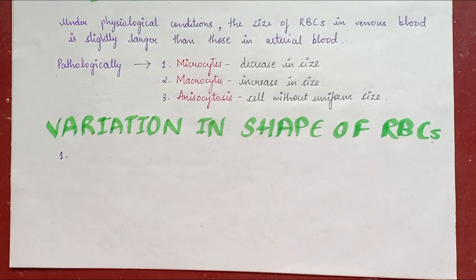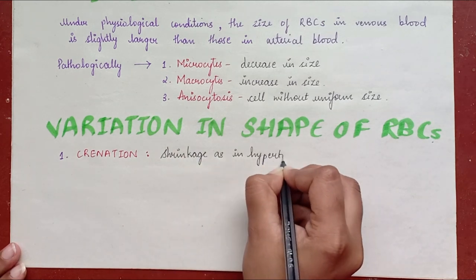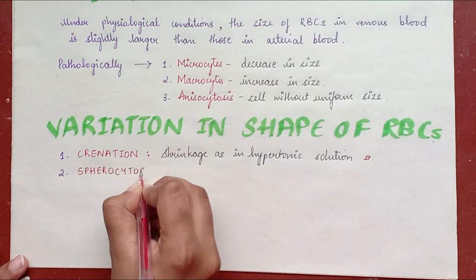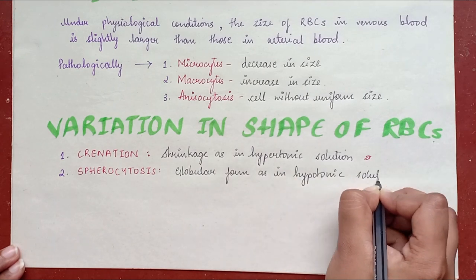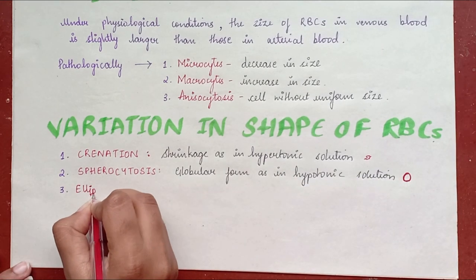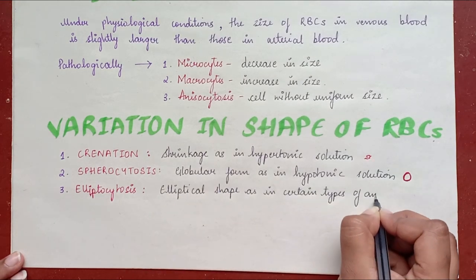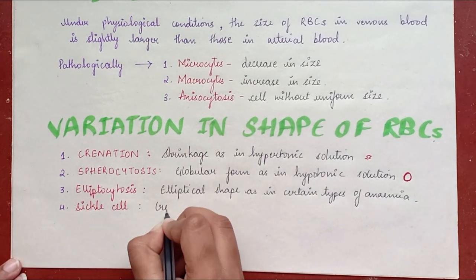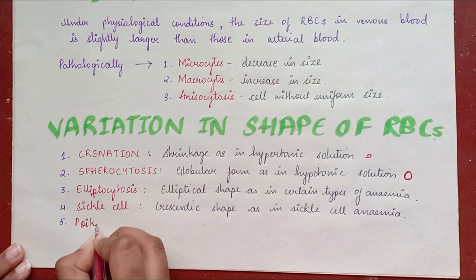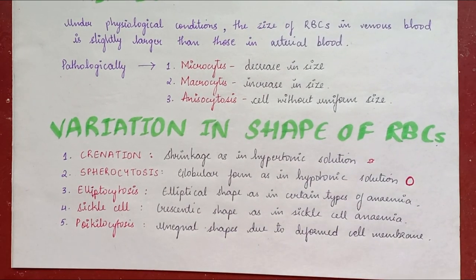Variation in the shape of RBC: crenation is shrinkage as seen in hypertonic solution; spherocytosis is a globular form as in hypotonic solution; elliptical shape occurs in certain types of anemias; sickle cell is a crescent shape seen in sickle cell anemia; and poikilocytosis refers to unequal shape.